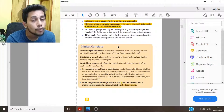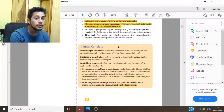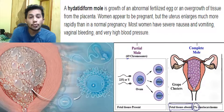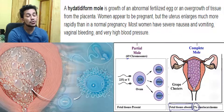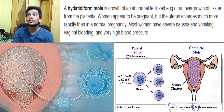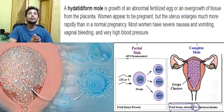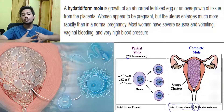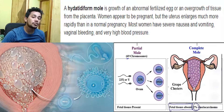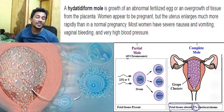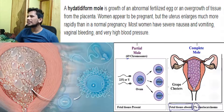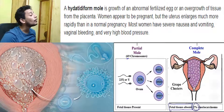Another clinical correlation is hydatidiform mole, which we discussed in the previous chapter. Remember the trophoblast from chapter 2 — it differentiates and divides to form the epiblast and hypoblast. If the trophoblast is just taken over, we end up with a hydatidiform mole. That's just another clinical correlate you don't need to go too deeply into.